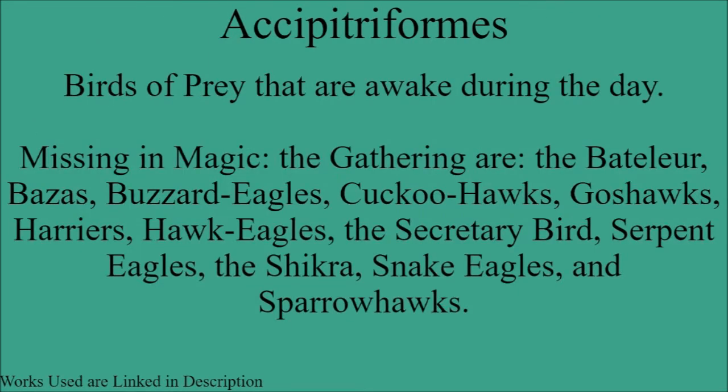First up, as you may have been able to guess from the introduction, are the accipitriformes. These are birds of prey that are awake during the day. The ones that are missing in Magic the Gathering are the following: the boteller, bazas, buzzard eagles, cuckoo hawks, goss hawks, harriers, hawk eagles, the secretary bird, serpent eagles, the shikra, snake eagles, and sparrow hawks. While there might be a few others I missed, these are the ones I mainly noticed as appearing to be missing in Magic the Gathering.